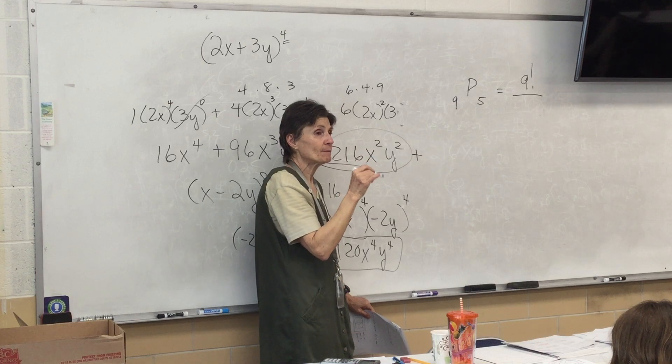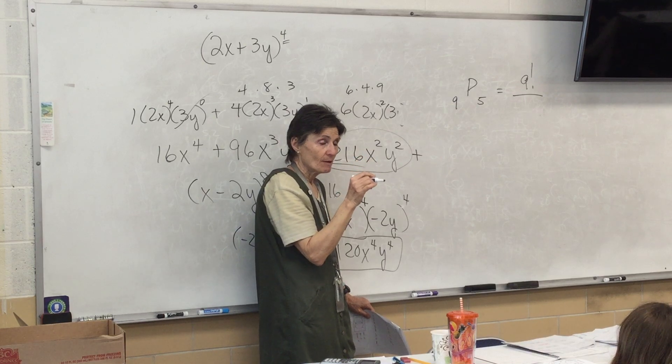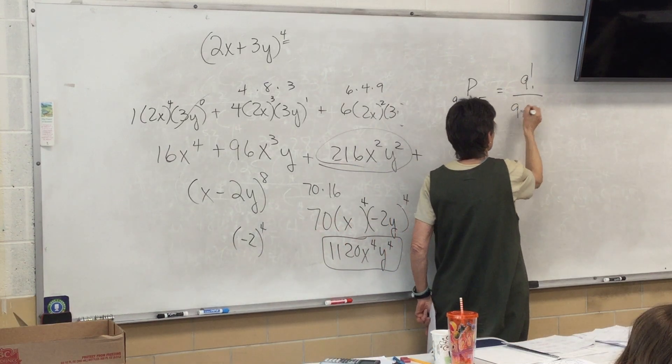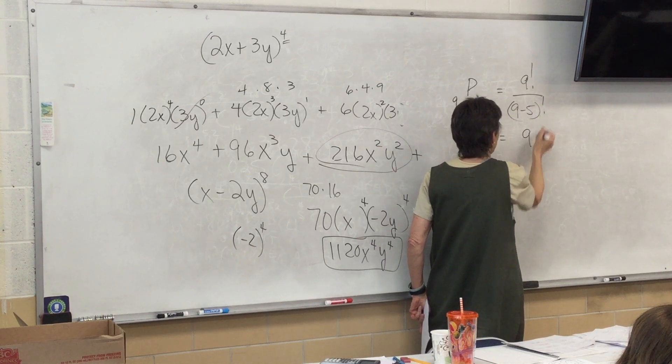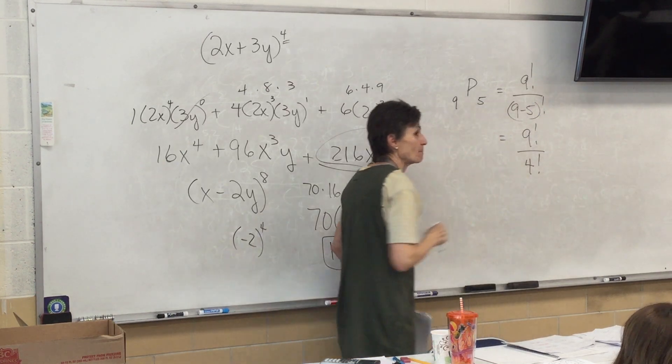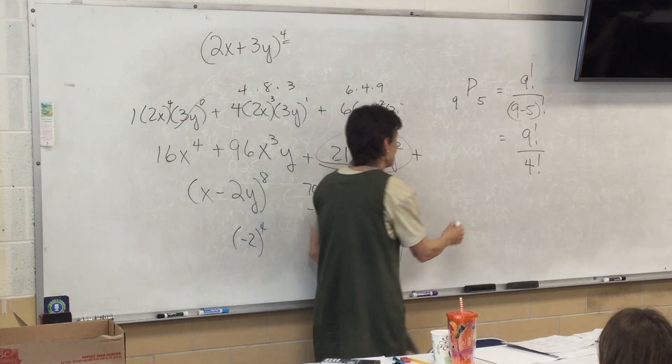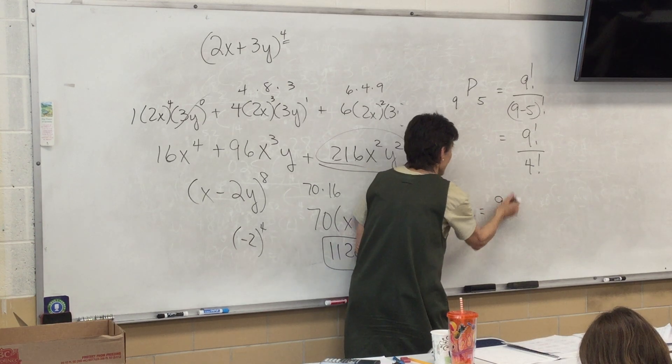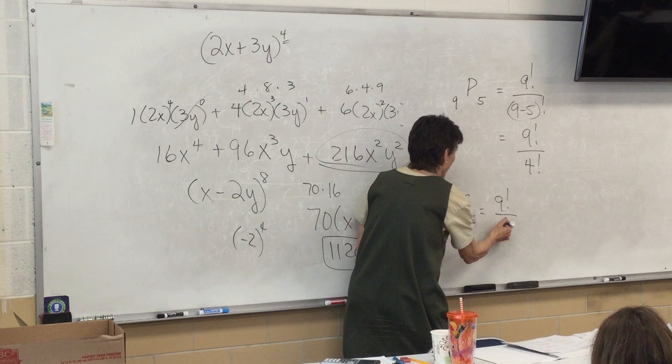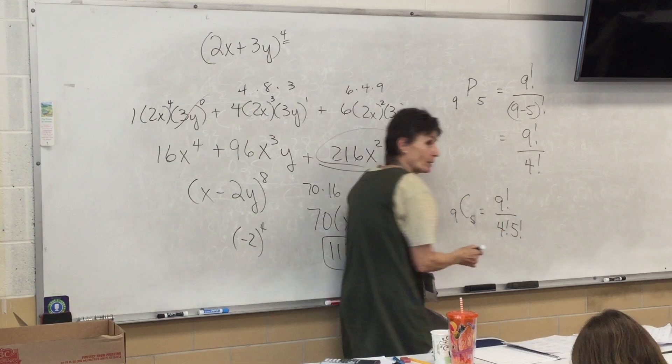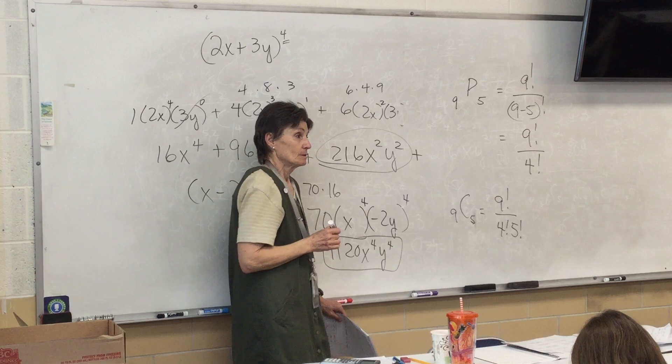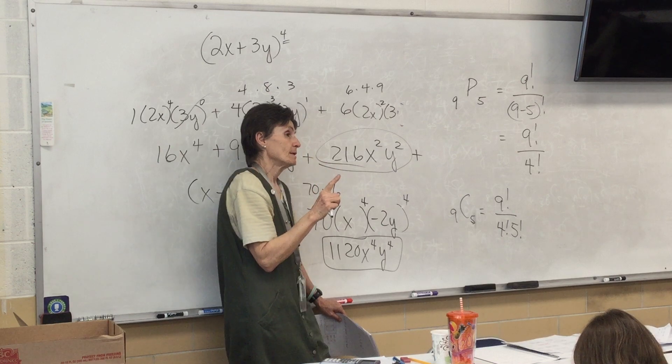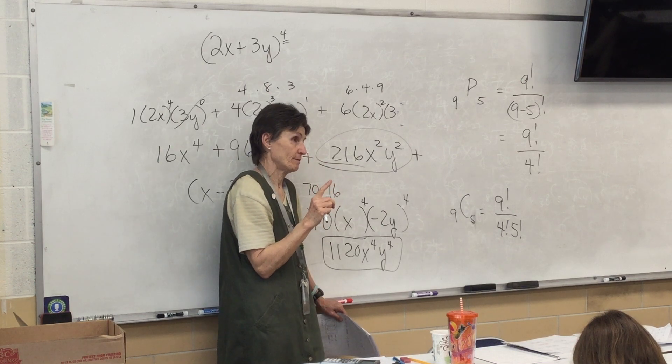But, on the bottom of a P, there's only one thing on the bottom of a P, and it is the subtraction. So, 9 factorial over 4 factorial. That's the P problem. Remember, in a C problem, it's 9 factorial over 4 factorial, but also 5 factorial. So, a C problem has two things on the bottom, a P has only one, and the thing on the bottom is the subtraction piece.